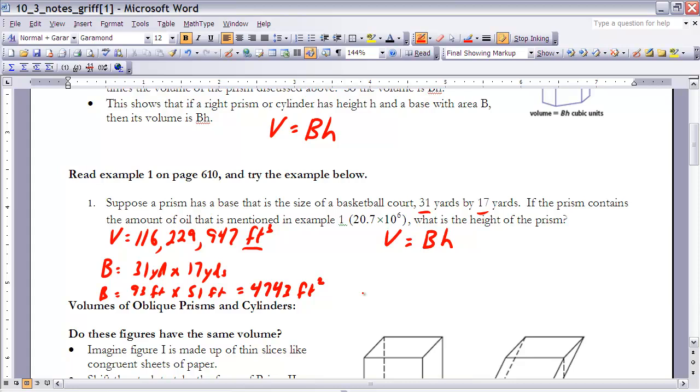So I'm going to plug in the two things I know and solve for what I don't know. So I'm going to plug in the volume. That's the number of cubic feet I have. I'm going to plug in my base area which is 4743, and then I'm going to solve for h. So I'm going to need to divide both sides by 4743.